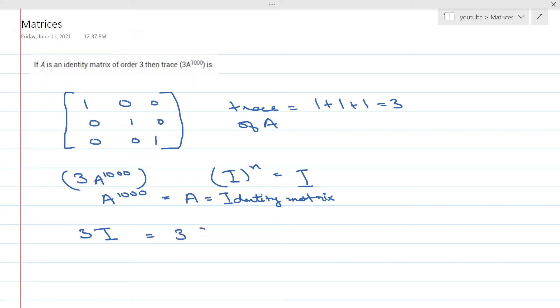So this is nothing but 3 times the identity matrix, which is 1, 0, 0, 0, 1, 0, 0, 0, 1.